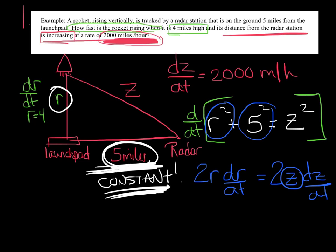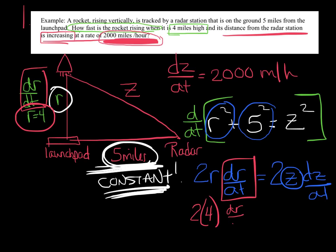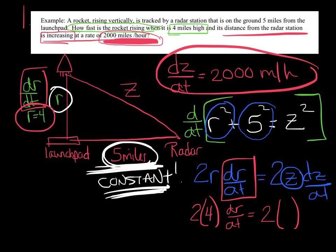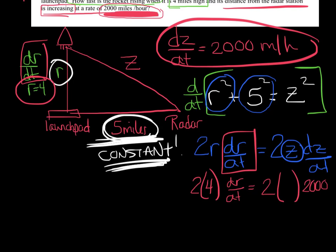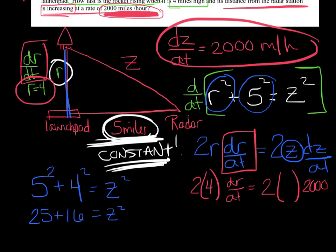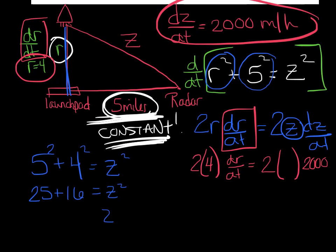Now that I've derived, it's fair game to plug in any number I have. My question is to find dR/dt, so that's the only variable I shouldn't know — specifically when the height of the rocket is 4. So: 2 × 4 × dR/dt = 2 × Z × 2000. I don't know Z at the moment, so I'll use Pythagorean theorem: 5² + 4² = Z², giving 25 + 16 = Z², so Z = √41.